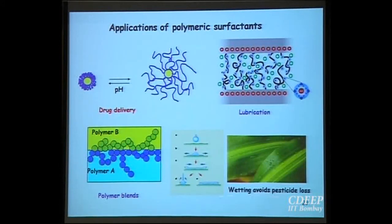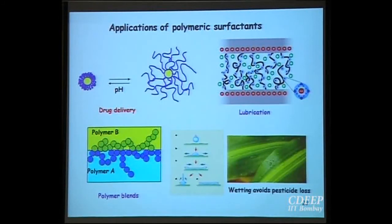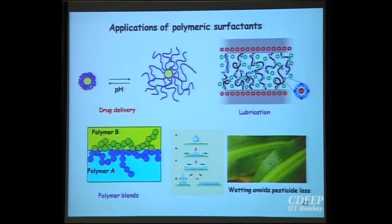You can also change wetting characteristics by adding polymers. When a drop falls and strikes a surface, it spreads but then recoils because it has high potential energy, and part of the pesticide is lost. By adding a polymer, you prevent retraction — the drop spreads but does not retract — and as a result you can save the pesticide.